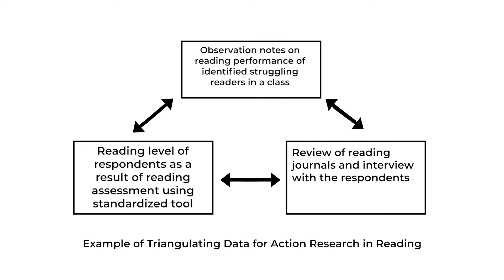This is an example of triangulating data for action research in reading. First, observation notes on reading performance of identified struggling readers in a class. Second, a review of reading journals and interviews with the respondents. And a third method to triangulate data is the reading level of respondents as a result of reading assessment using appropriate tools.